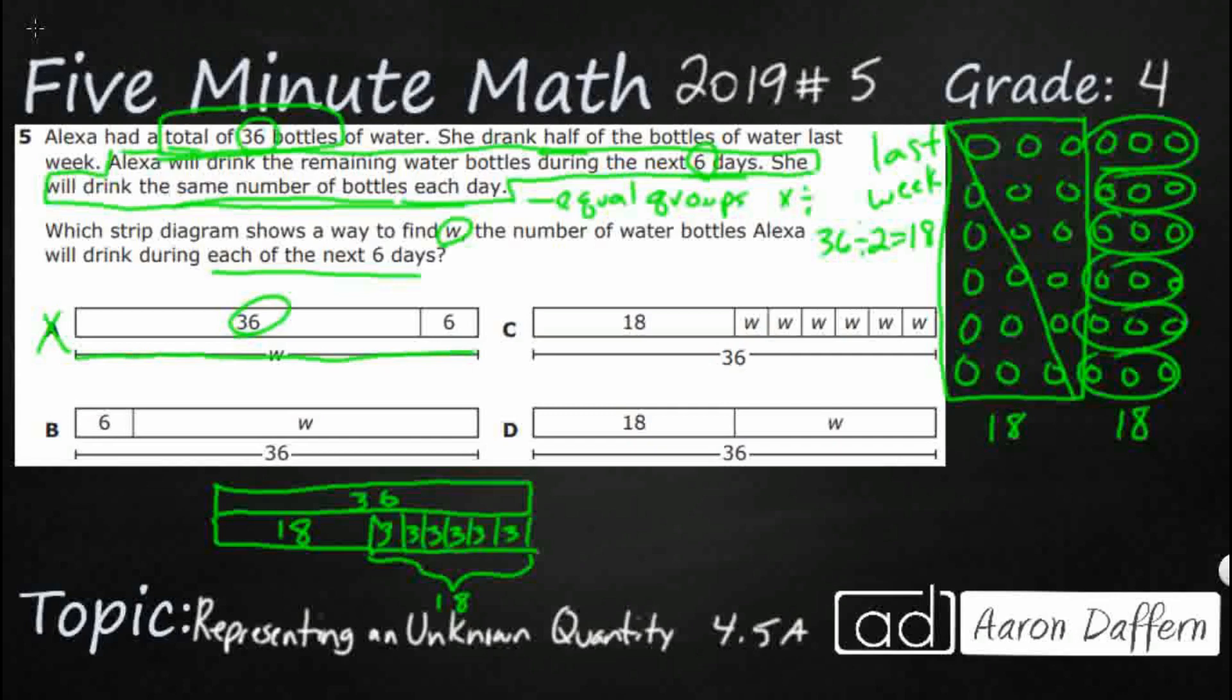B, your 36 is your total. That's fine. And we've got the 6. The 6 isn't an amount. It's just the next six days. So that's not even an amount. And that doesn't deal with half of it being gone. C looks like they've got half gone. D looks like they've got half gone. So the difference is D doesn't split it up into six equal days. And the answer is C.